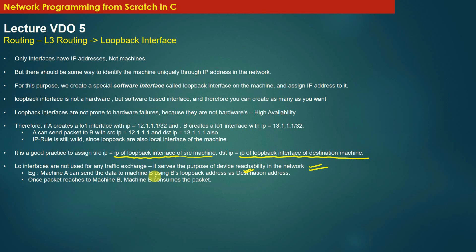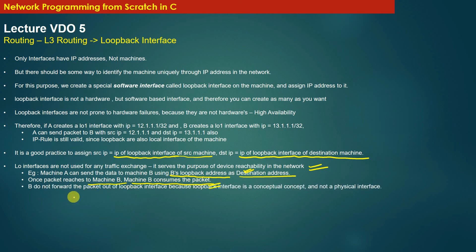Machine A can send data to machine B using B's loopback address as the destination. Once the packet reaches machine B, machine B will consume it locally. There is no forwarding out of the loopback interface, because the loopback interface is a conceptual concept and not a physical interface. Any packet arriving at machine B with a destination IP equal to the loopback IP is locally processed.